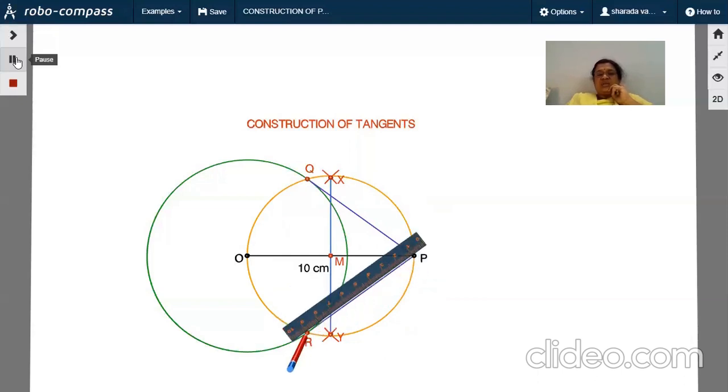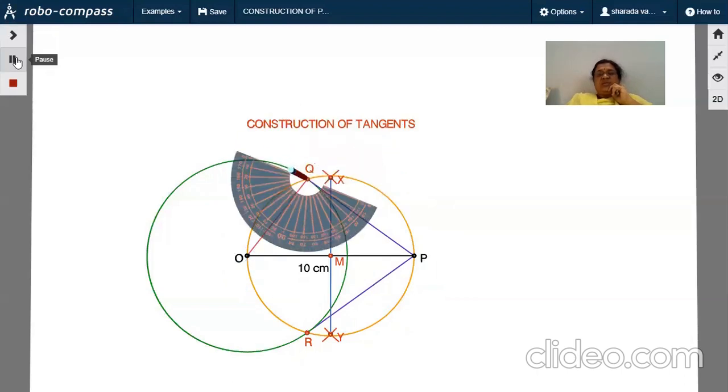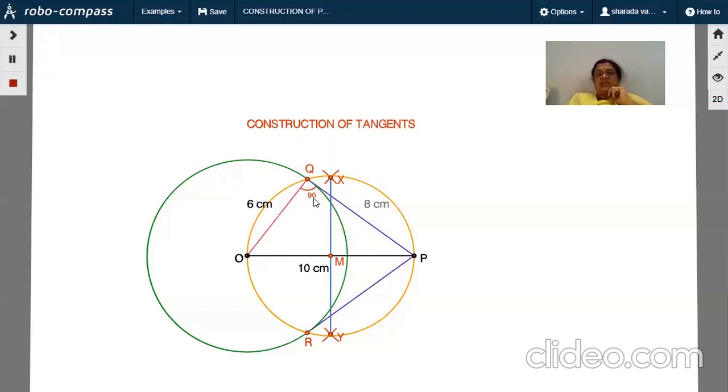When you join OQ, this will be the radius of the circle, which is 6 centimeters. The angle of the tangent and radius will be 90 degrees. Yes, it is 90 degrees. So this is the construction part.